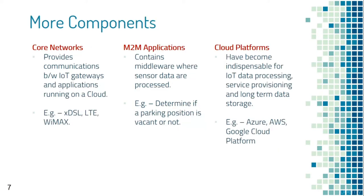The fourth component is core networks, which provides communication between IoT gateways and applications running on the cloud. The fifth component is M2M applications — the middleware where all sensor data is processed; for example, determining if a parking position is empty or not. The sixth and final component is cloud platforms, which are indispensable for IoT ecosystems.